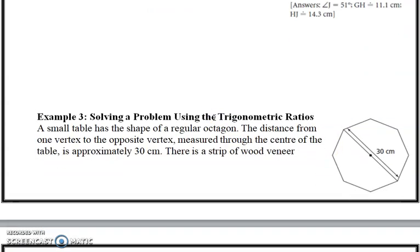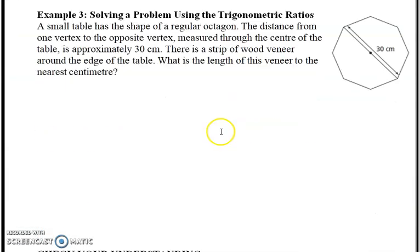Example 3 is solving a problem using trigonometric ratios. We have a small table in the shape of a regular octagon. So a regular octagon means that all the sides are equal, all the angles are equal. The distance from one vertex to the opposite vertex measured through the center of the table is approximately 30 centimeters. There's a strip of wood veneer around the edge of the table. What is the length of this veneer to the nearest centimeter?